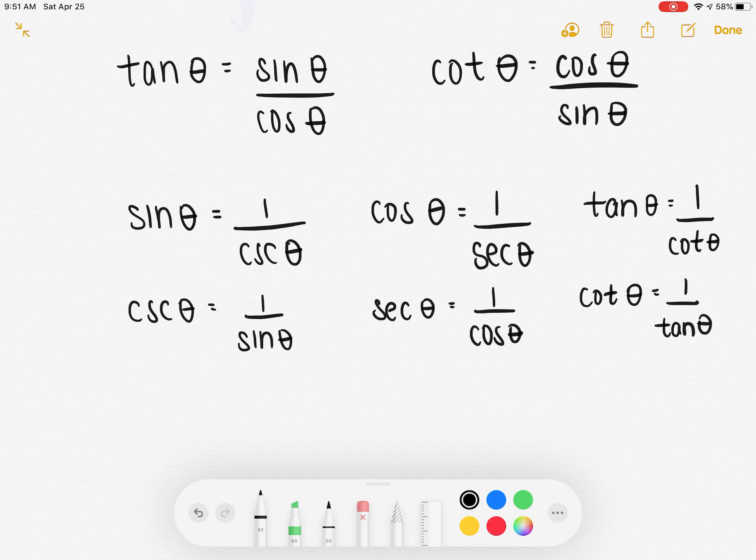You're going to have to use these and plug in and try to get everything to cancel out to be one. If you can't get everything to cancel out, then it doesn't equal one. If you can get everything to cancel out, it does equal one, and once you've decided which ones equal one, then you'll know which answer is correct.